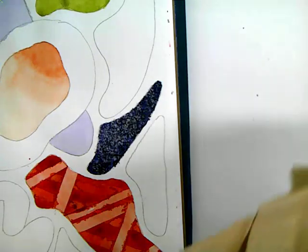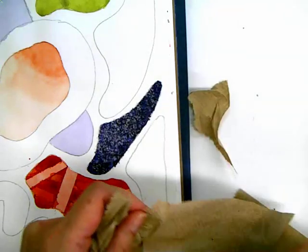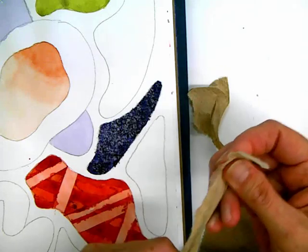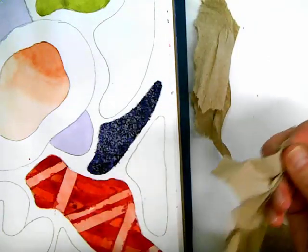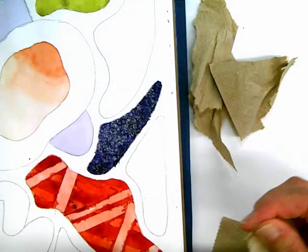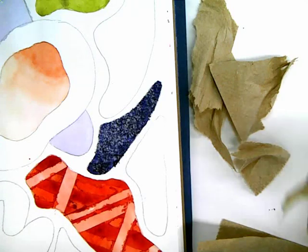I'm going to start by tearing these into little strips because it's the paper towels that I will use for blotting.